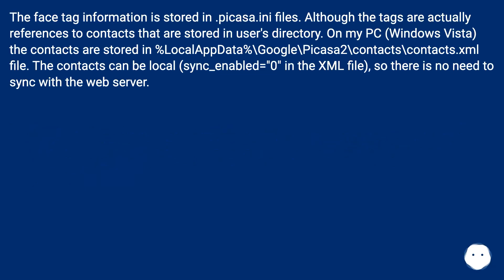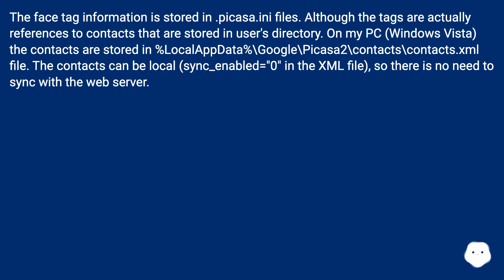The face tag information is stored in .picasa.ini files, although the tags are actually references to contacts stored in the user's directory. On my PC running Windows Vista, the contacts are stored in %localappdata%\Google\Picasa2\contacts\contacts.xml. The contacts can be local, with sync_enabled=0 in the XML file, so there is no need to sync with the web server.